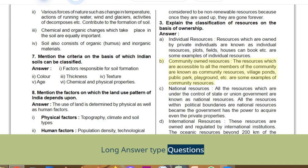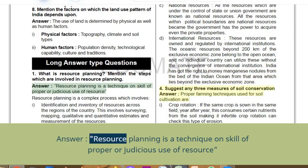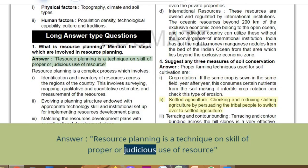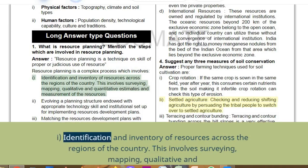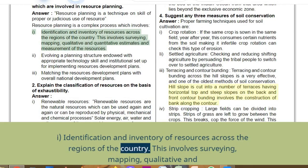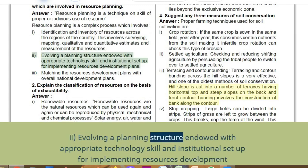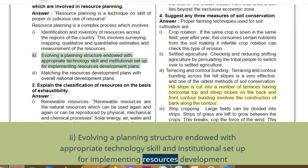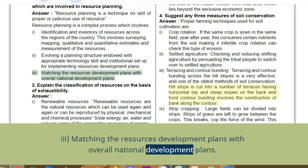Long answer type questions. Q1: What is resource planning? Mention the steps involved. Answer: Resource planning is a technique or skill of proper and judicious use of resources. It is a complex process involving: (i) identification and inventory of resources across regions — including surveying, mapping, and qualitative and quantitative estimates; (ii) evolving a planning structure with appropriate technology, skill, and institutional setup for implementing resource development plans; (iii) matching resource development plans with overall national development plans.